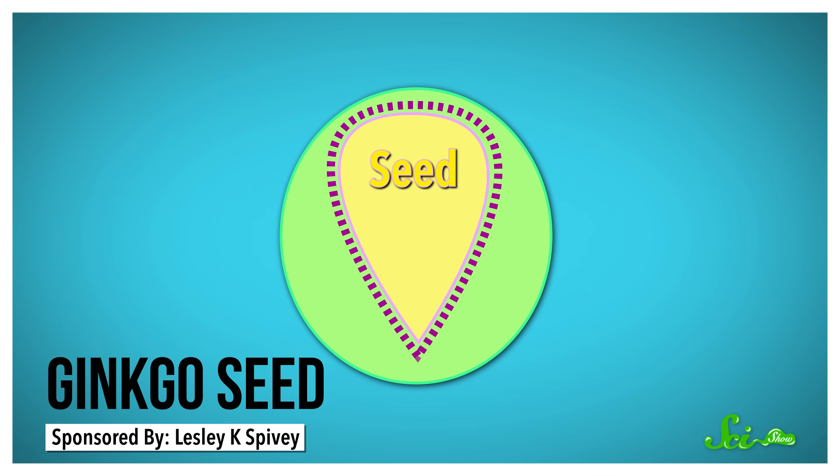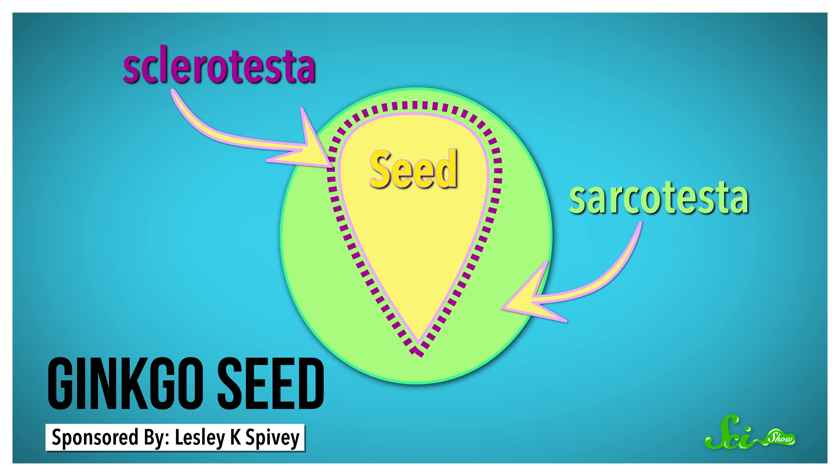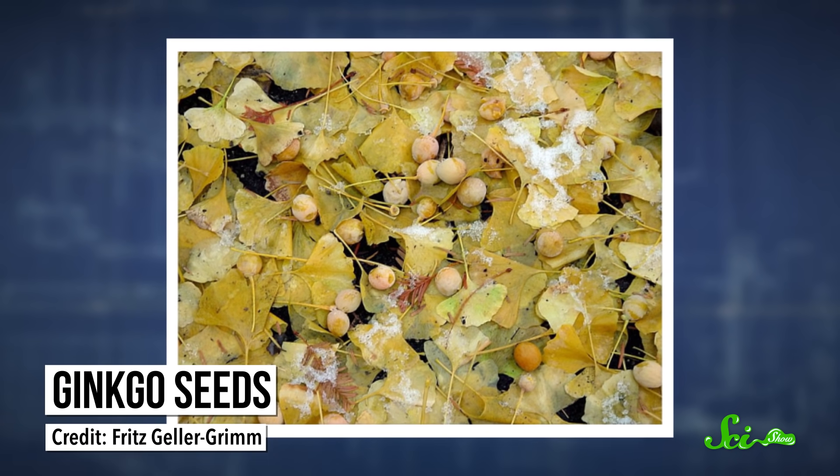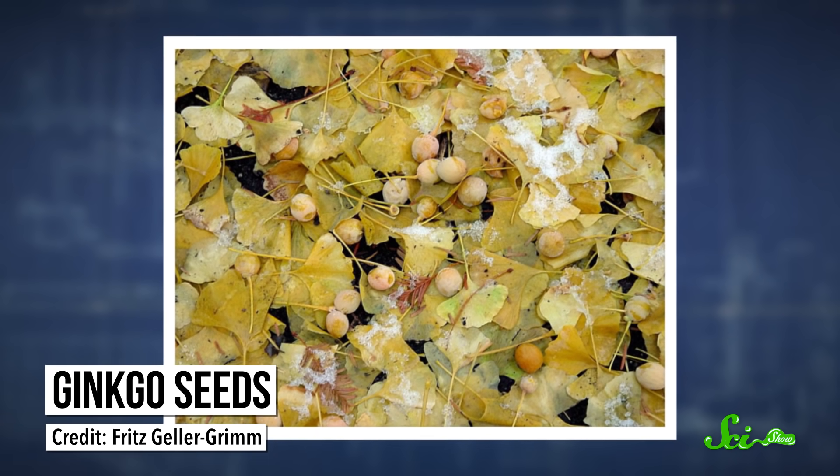To survive the cold, the seed coat is made of three layers. A soft outer layer called the sarcotesta, a hard middle layer called the sclerotesta, and a thin inside layer called the endotesta. It looks kind of like an oversized yellow cherry, and it's the soft, fruit-like layer that's responsible for the horrible smell.